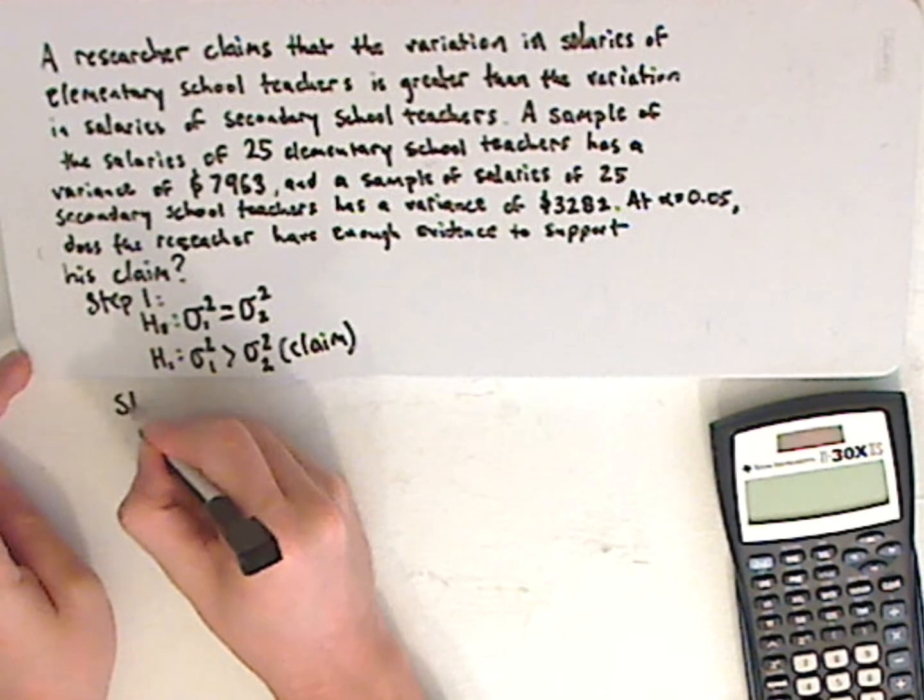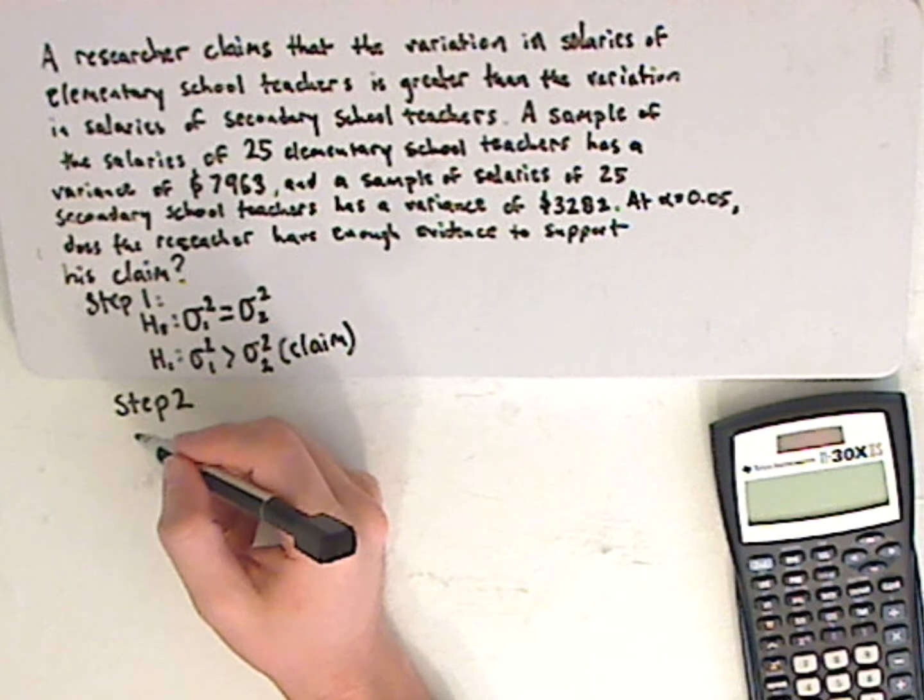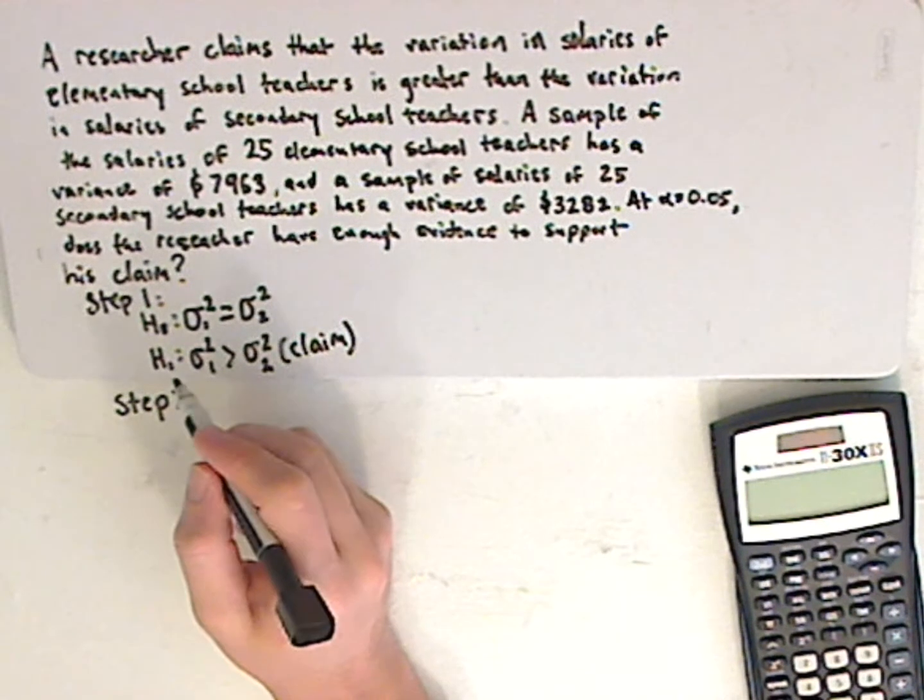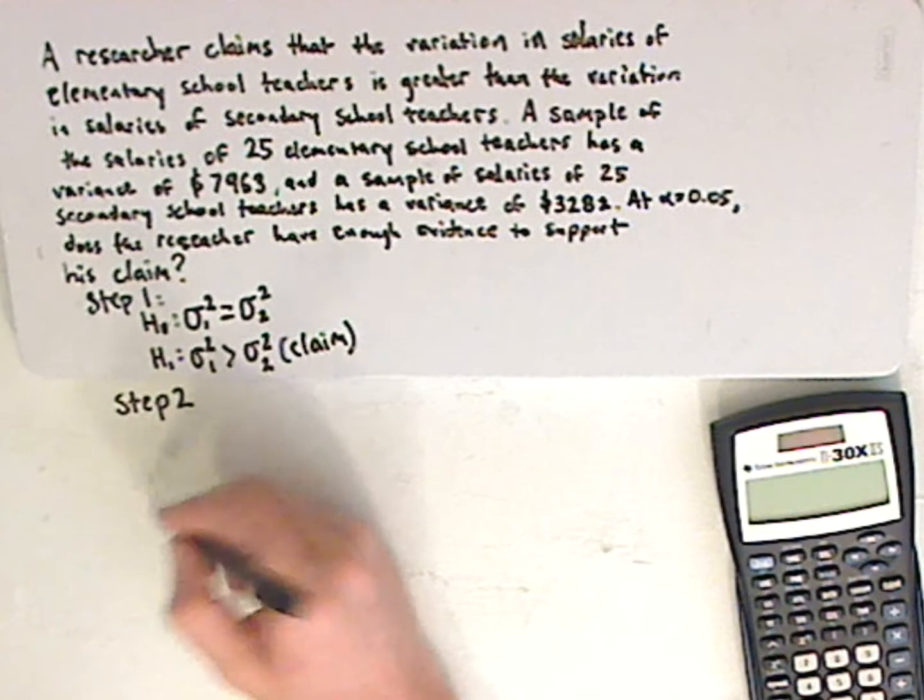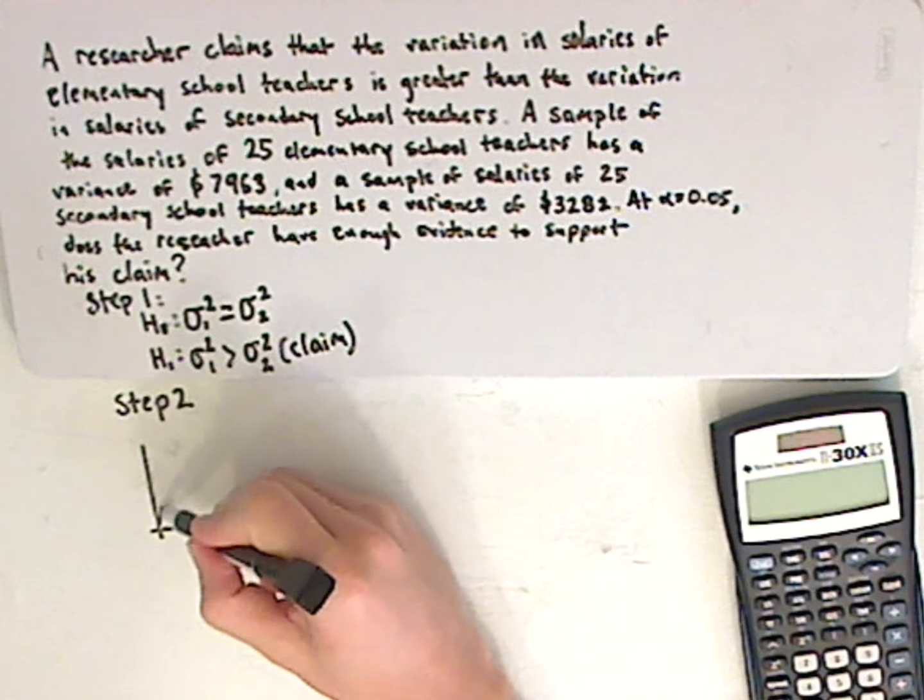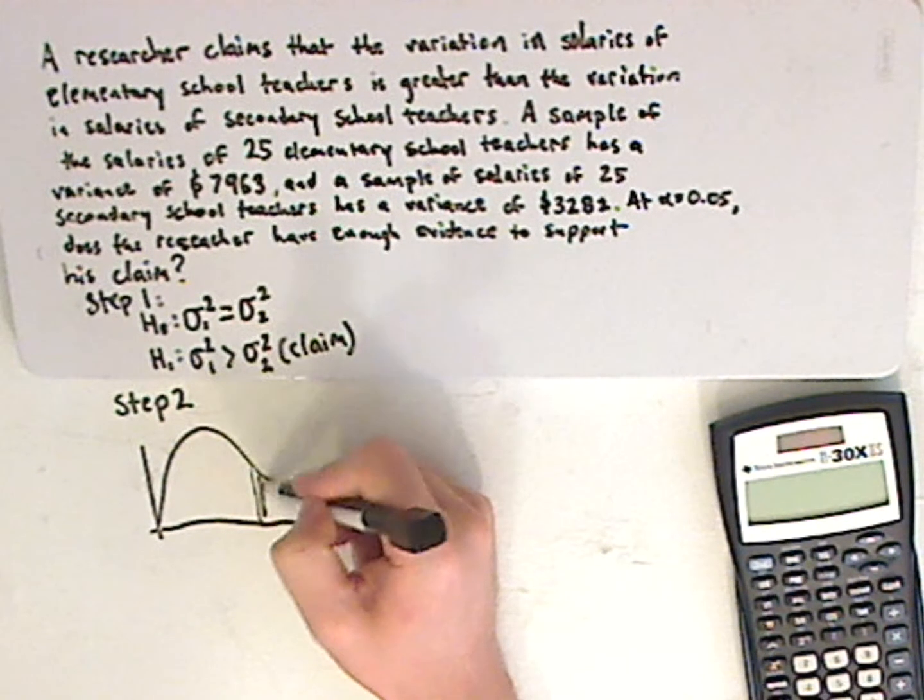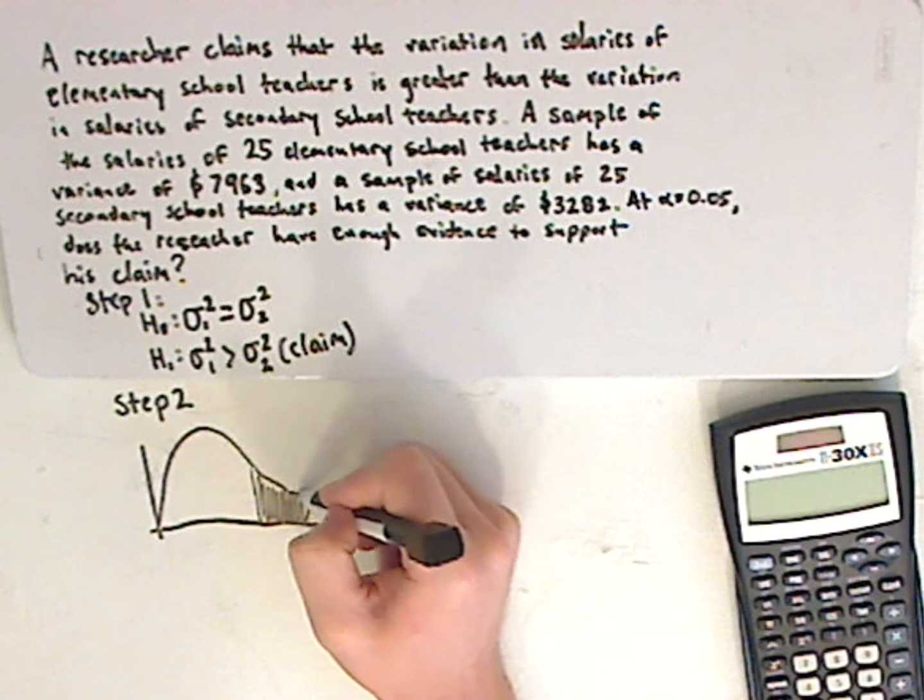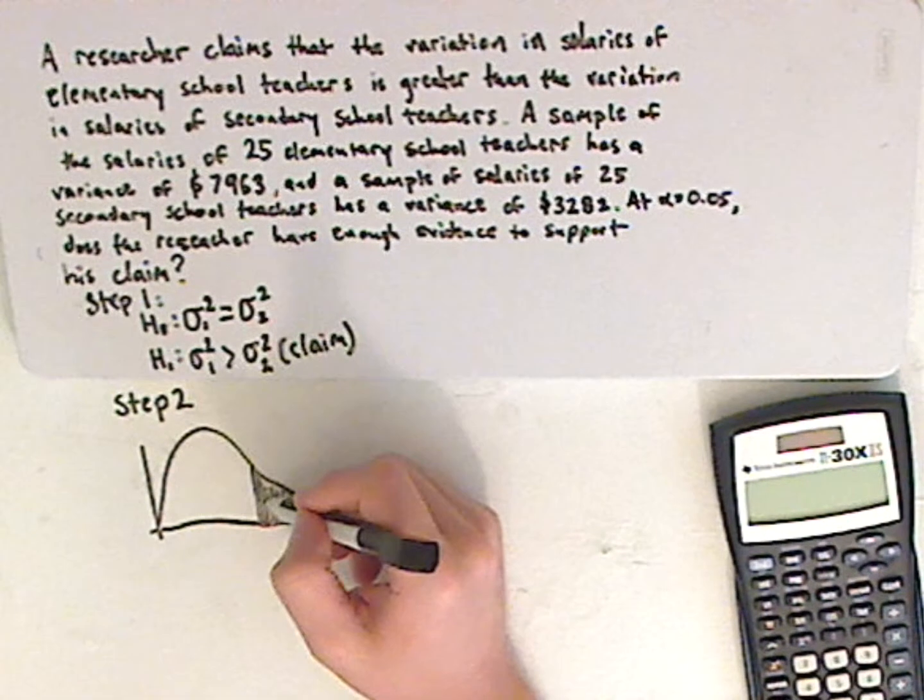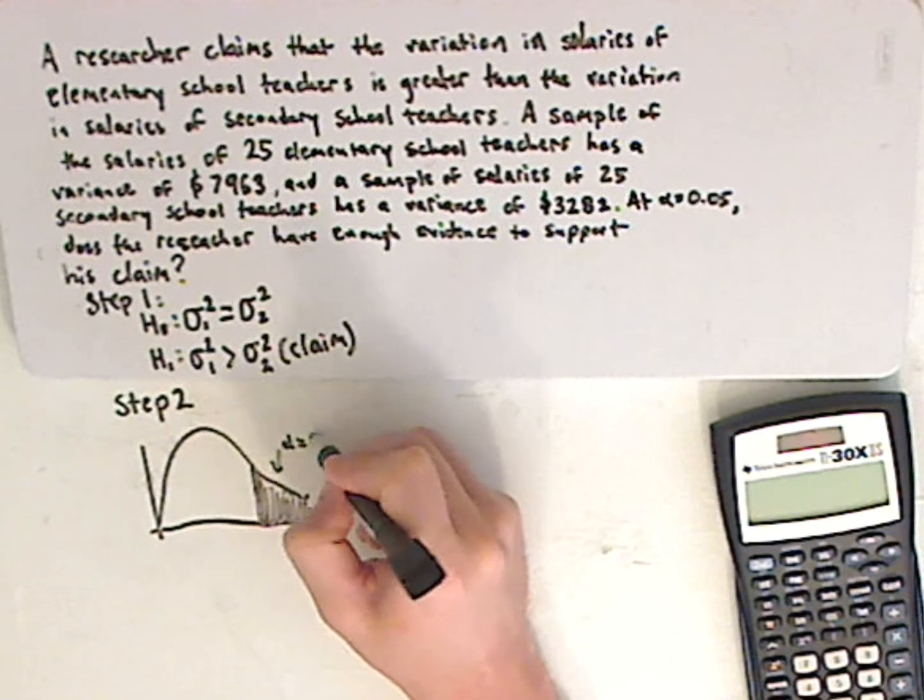Now step number two, is you're going to need to do your critical regions. And for that, for critical regions, you're going to use, with this since it has an F test, you're going to use the F distribution. So the F distribution. Now it looks something like this, but it might actually look something different. Now in fact, with all of these, it's going to be right tails. So your alpha is equaling 0.05.